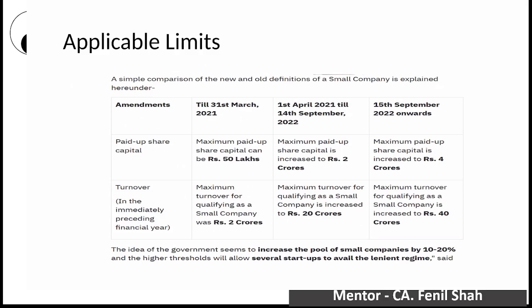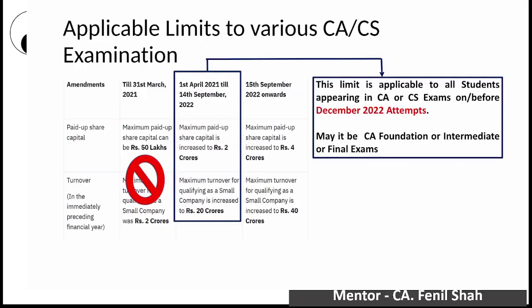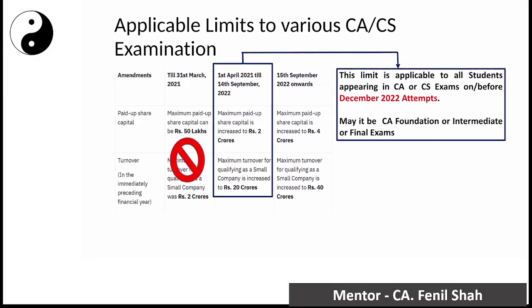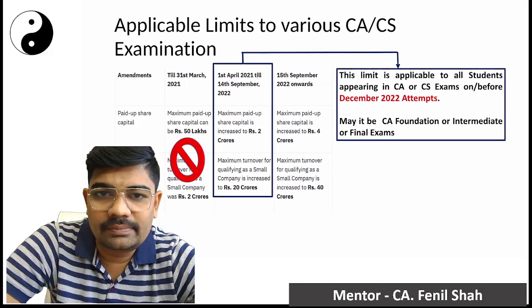I will clarify in one minute which attempt has which applicable limit. The idea of the government seems to be to increase the pool of small companies by 10 to 20%, and higher threshold or ceiling limits will allow several start-ups to get the lenient benefits of the Companies Act. So the government has increased this limit.